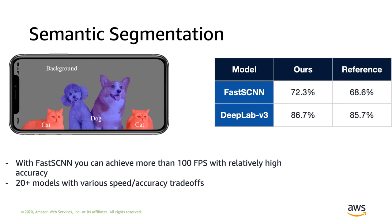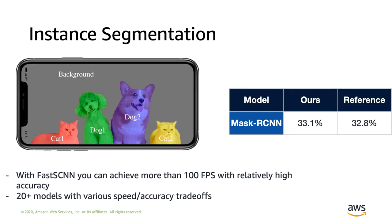Semantic segmentation is another highlight in GluonCV's model zoo. For example, you can access high-performance semantic segmentation models such as DeepLab V3. You can also achieve more than 100 FPS with relatively fast models such as Fast SCNN. We also include more than 20 models with various speed-accuracy trade-offs so you can choose the metric you prefer. We also include instance segmentation — for example, Mask RCNN — in our model zoo, with slightly higher accuracy than the original paper.